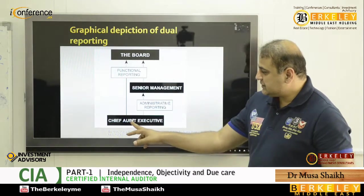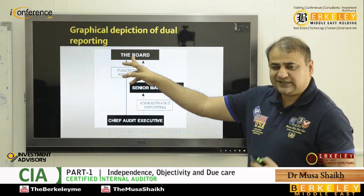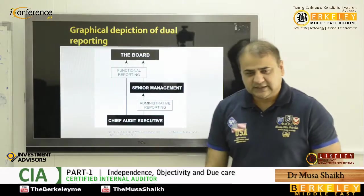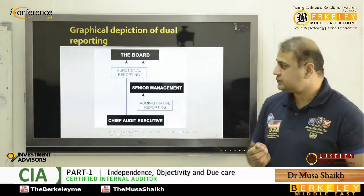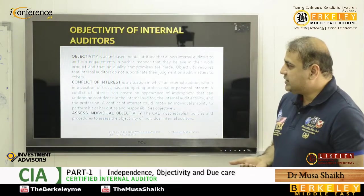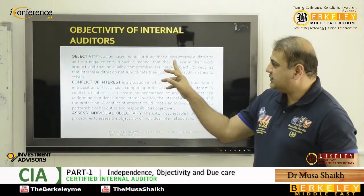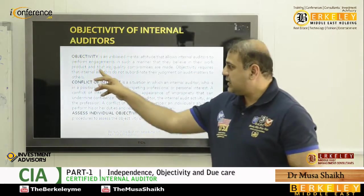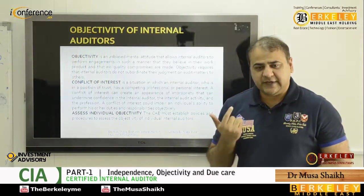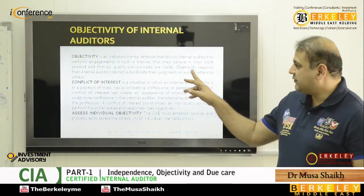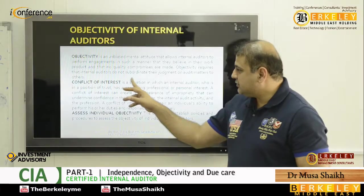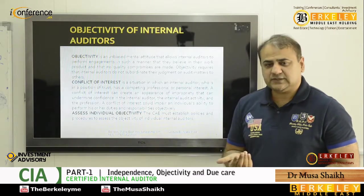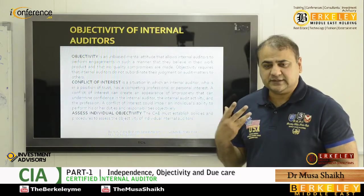In a diagram, you can see the head of internal audit functionally reporting to the board, which has a committee called the audit committee. Administratively, for annual leave and daily issues, the head reports to senior management led by the CEO. Objectivity is an unbiased mental attitude that allows internal auditors to perform engagements in a manner where their work and product are not quality-compromised. You base decisions on facts and figures, remain fair and rational, and do not subordinate your judgment on audit matters to others. You should not be biased, and should not allow racism, culture, or religion to influence your work.